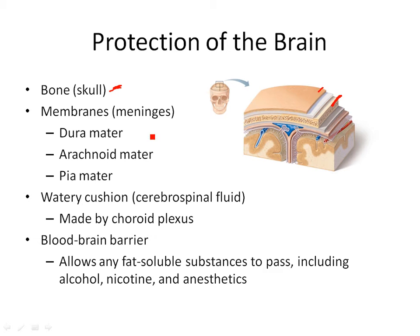Then you have three layers of meninges — meninges is just a fancy word for membranes. You have the dura mater, the arachnoid mater, and the pia mater. These are the meninges. The dura mater is the tough layer, as in durable — the tough or durable layer.